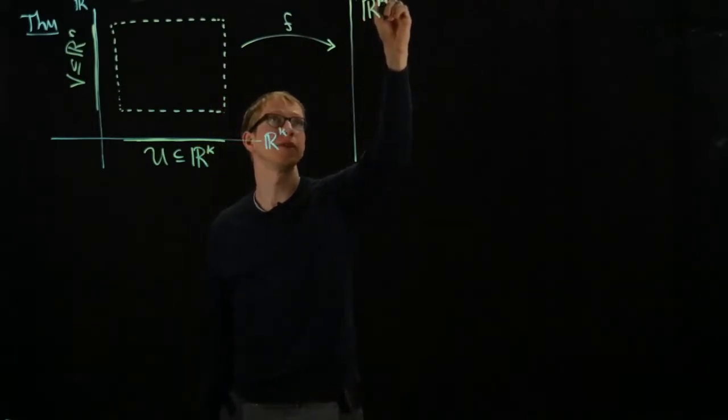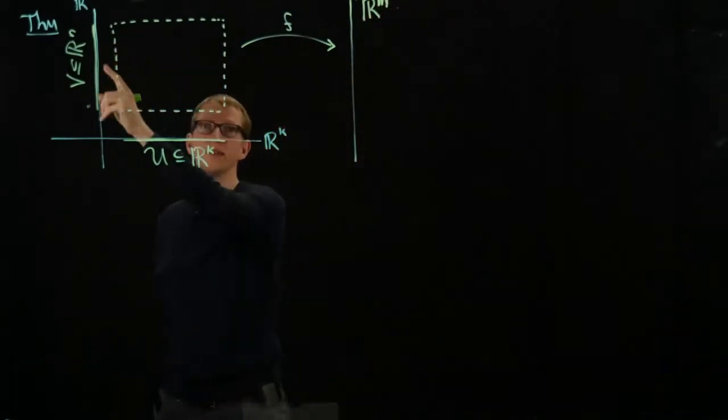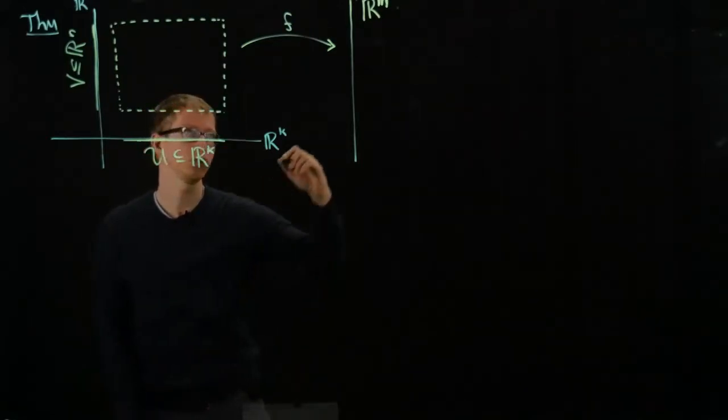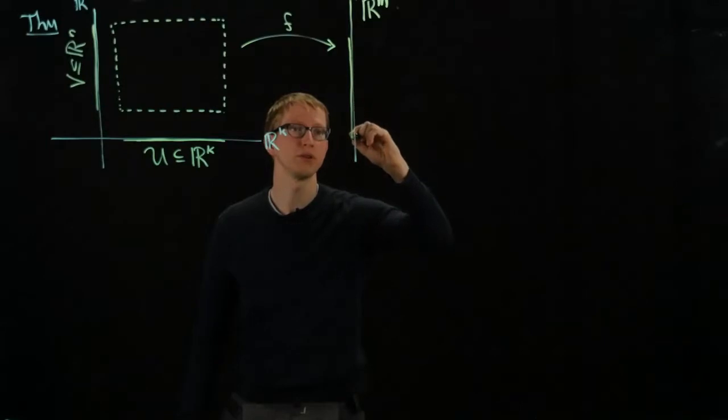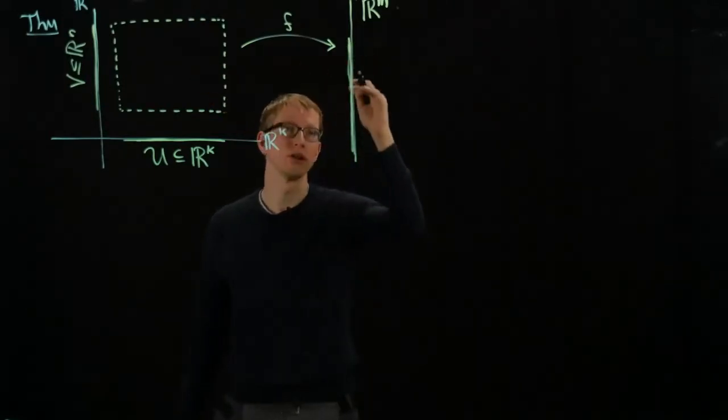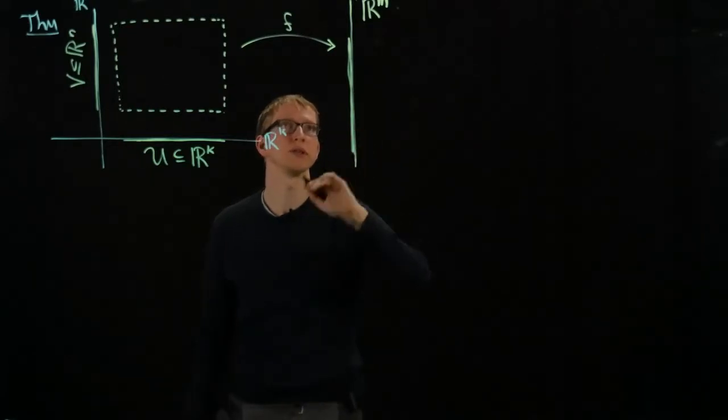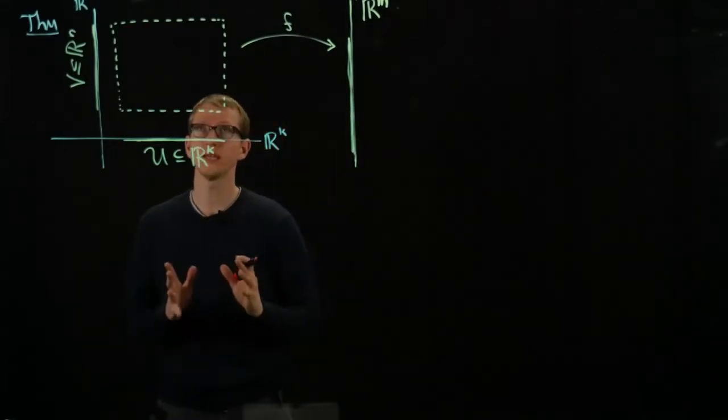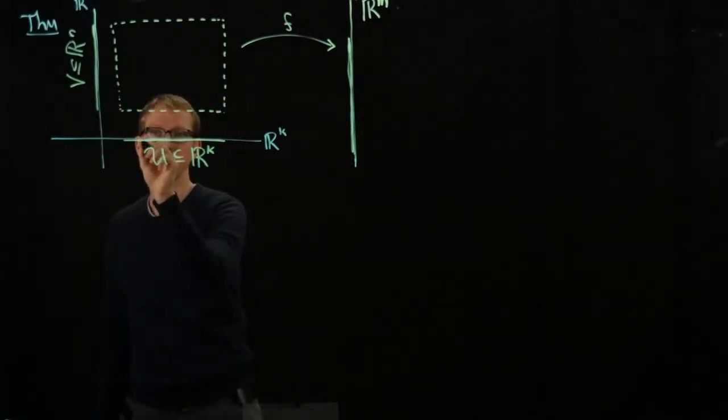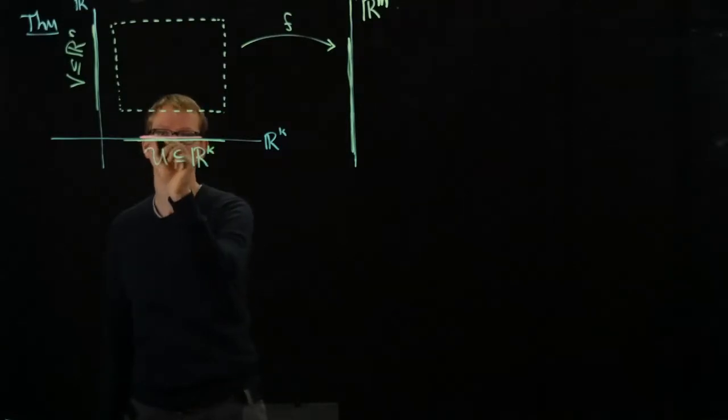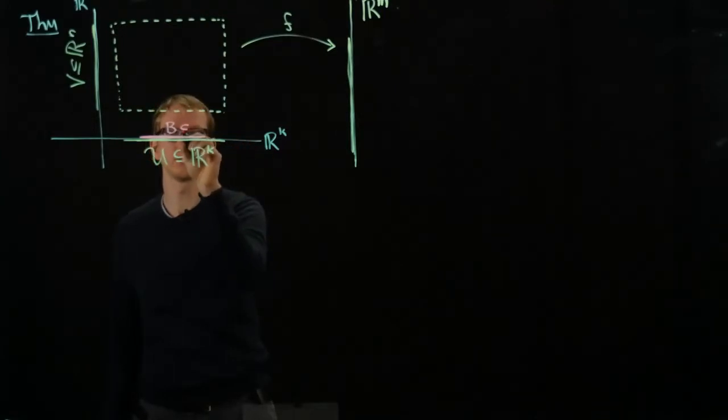Let's just draw the codomain, or the range. If these open sets were connected, then this would also be a connected subset. Suppose, besides just having this function, that there exists an open subset of U. Let's call it B. So B is an open subset of R^K, but it's also in U.